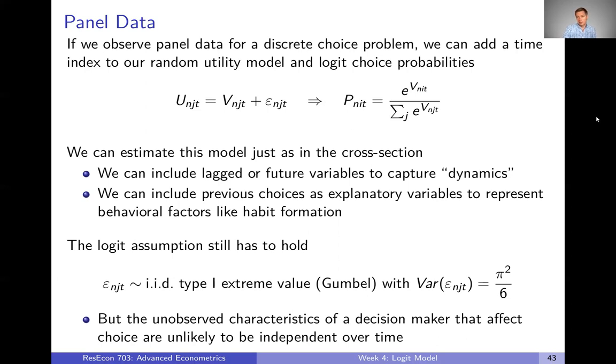Every decision maker by time period is kind of like its own observation with its own choice probability. We can estimate this model exactly like we did in the cross-section. We can augment it a little bit. If we have panel data, we could use lagged or future variables.